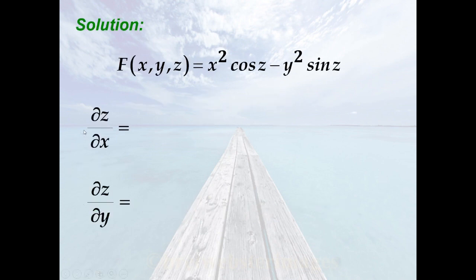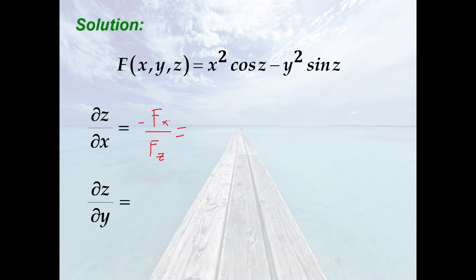We need to find the partial of z with respect to x and with respect to y. Recall that the partial of z with respect to x equals the negative of the partial of f with respect to x over the partial of f with respect to z. Solving for the partial of f with respect to x: in the first term, treating z as constant, we get 2x cos(z). For the second term, both y and z are treated as constants, so the derivative with respect to x is 0.